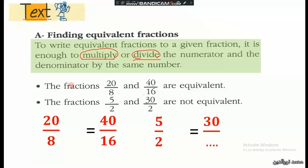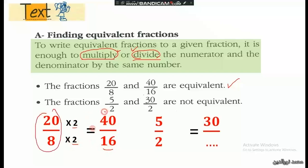In this example, the fractions 20 over 8 and 40 over 16 are equivalent, or equal fractions. How? We see that 20 is multiplied by 2 to give 40, and then 8 is multiplied by the same number 2 — 8 times 2 is 16. So 20 over 8 and 40 over 16 are equivalent fractions, since the numerator and the denominator are multiplied by the same number.